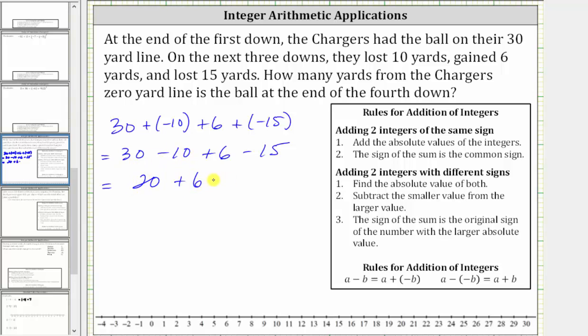30 minus 10 equals 20, giving us 20 plus six minus 15. 20 plus six is 26, giving us 26 minus 15. And 26 minus 15 equals 11. We now know the ball is 11 yards from the Chargers' zero-yard line.